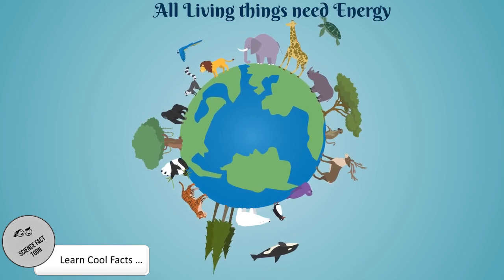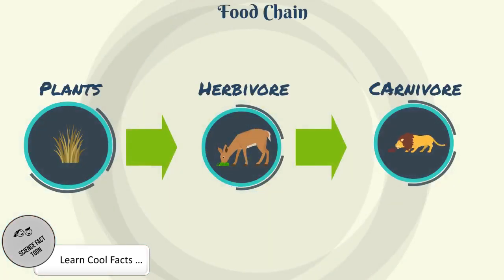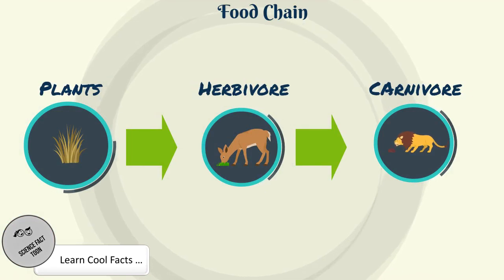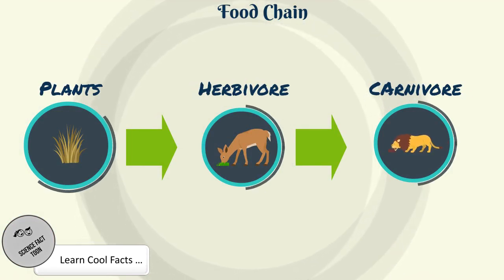Herbivores depend on plants for their energy source. Carnivores depend on herbivores for their energy source. This makes the food chain, which is the foundation of survival for all animals.